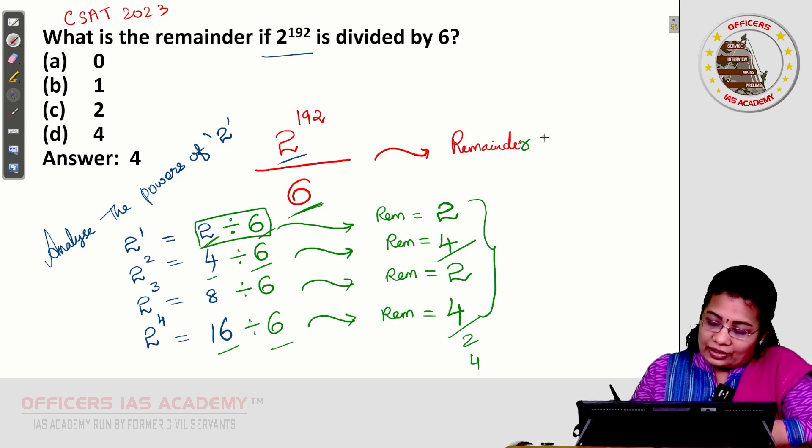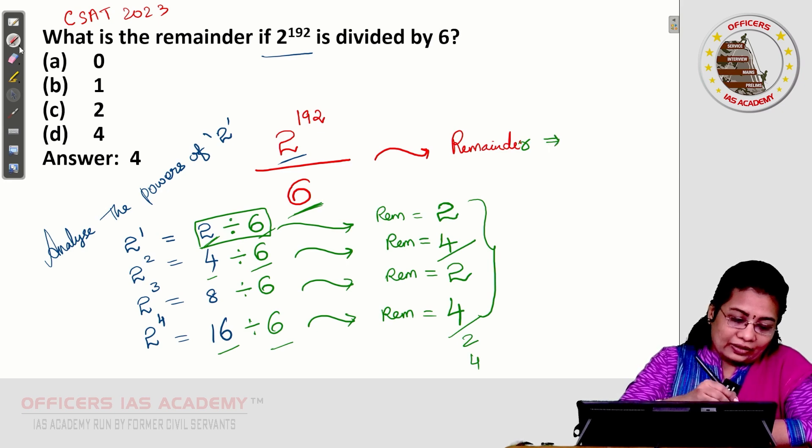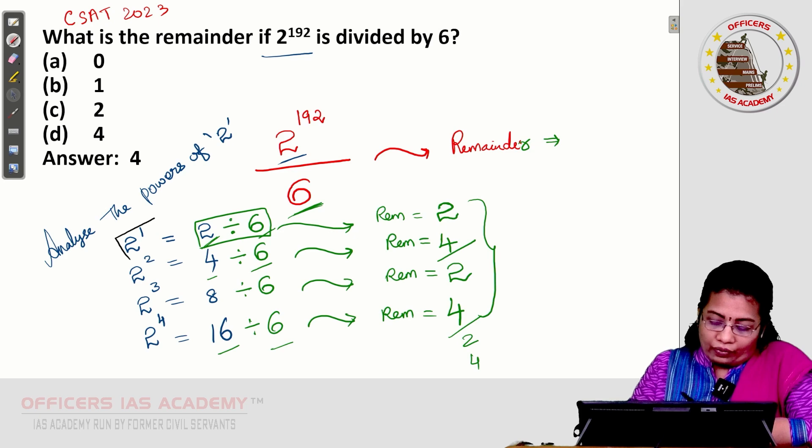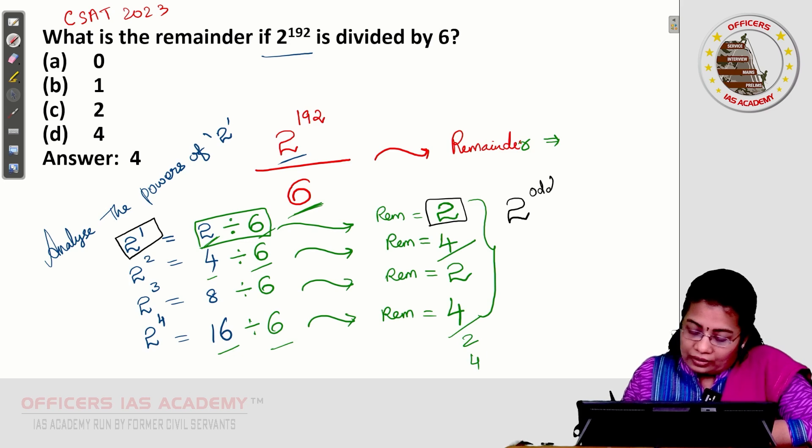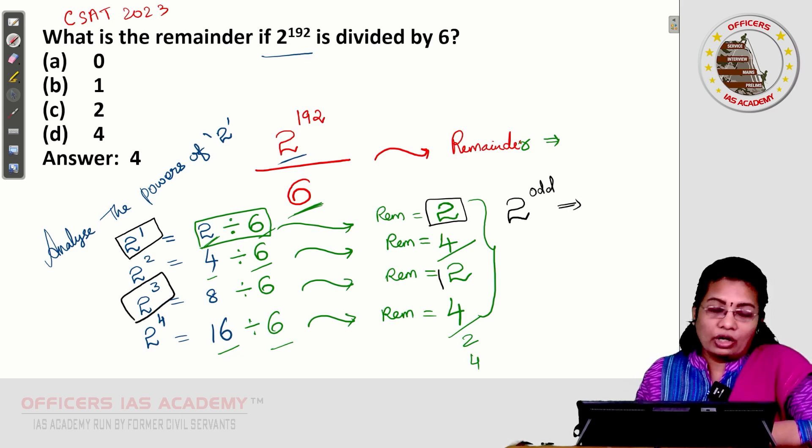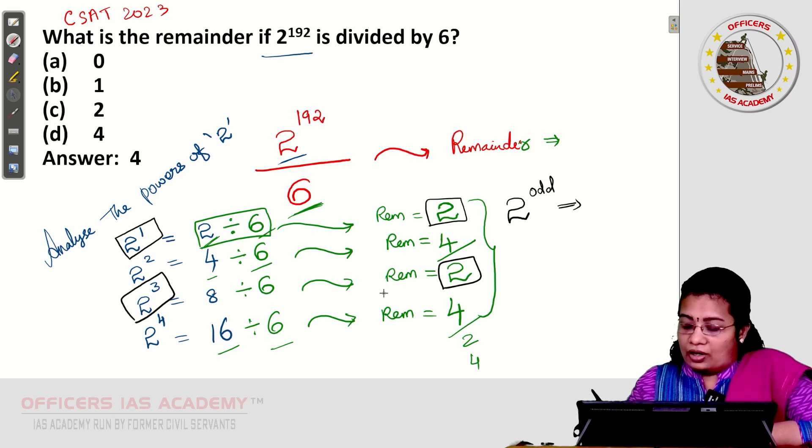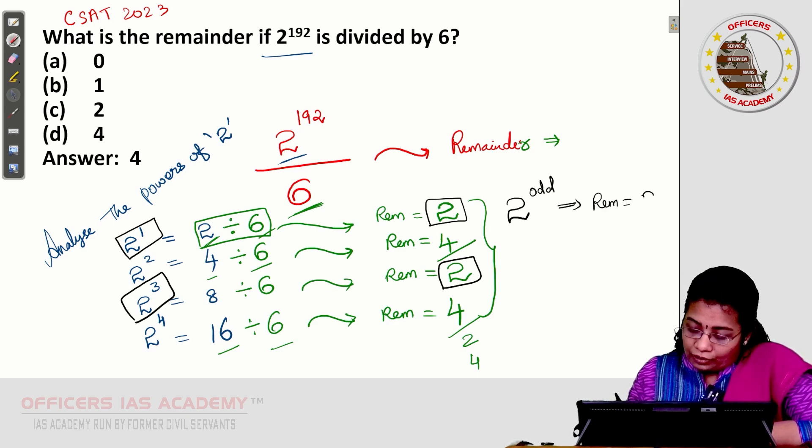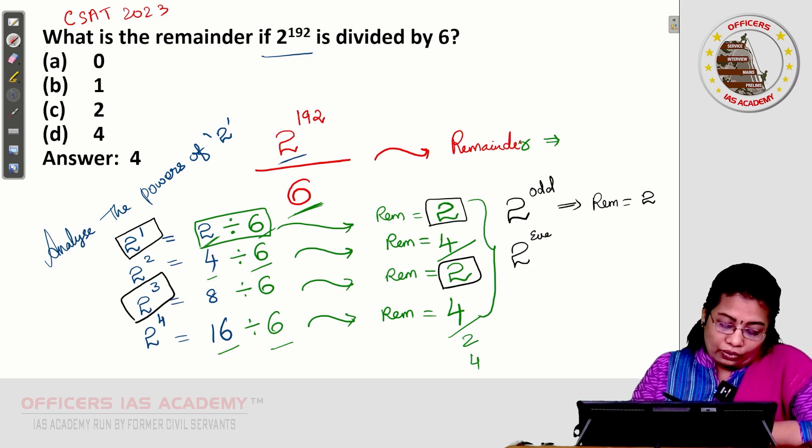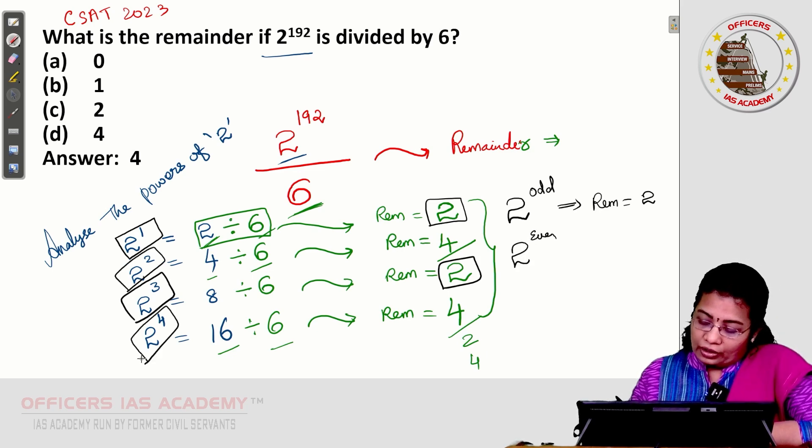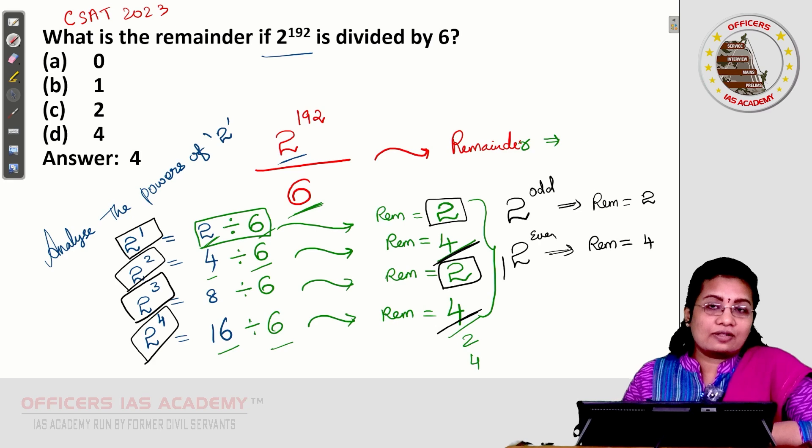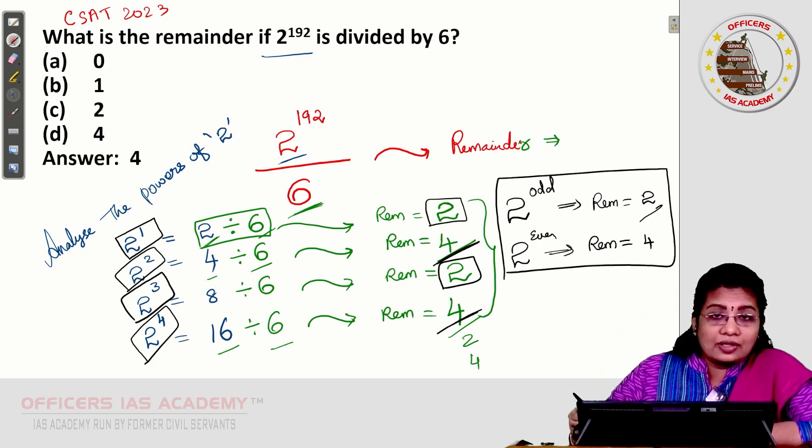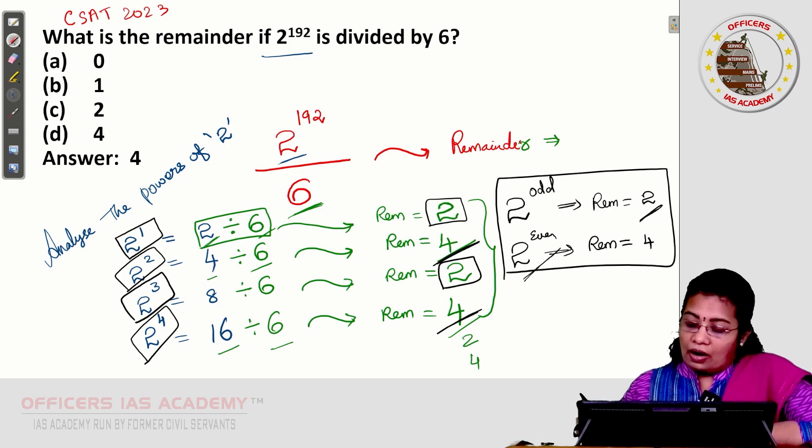I can write like this: 2 power 1, the remainder is 2. What is the understanding from this? When 2 power is odd, see here 2 power 3, the remainder is 2 again. When the power of 2 is odd, the remainder we get is 2. When the power of 2 is even, for example, you can look at 2 power 2 and 2 power 4, the remainder we got is 4. I can take this concept to crack this. When 2's power is odd, while dividing by 6, we get the remainder 2. When 2's power is even, while dividing by 6, we get the remainder as 4.